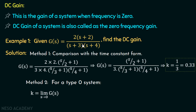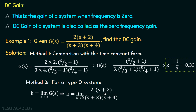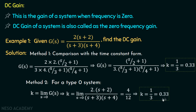Substituting the transfer function G(s) into this expression, we will have k equal to the limit as s tends to 0 of 2 multiplied with (s plus 2) divided by (s plus 3) multiplied with (s plus 4). Substituting the limit s tending to 0, we will have 4 over 12 and hence the value of k is equal to 1 over 3, which is 0.33. This expression k equal to limit s tending to 0 of G(s) is only valid for a type 0 system — we are given a type 0 system because there is no pole at the origin.